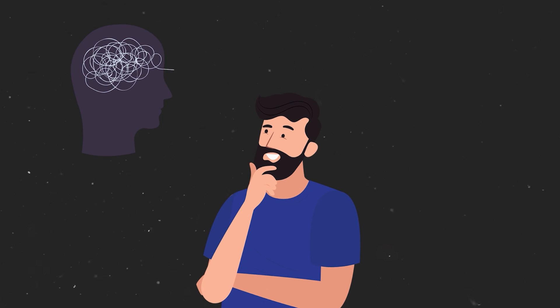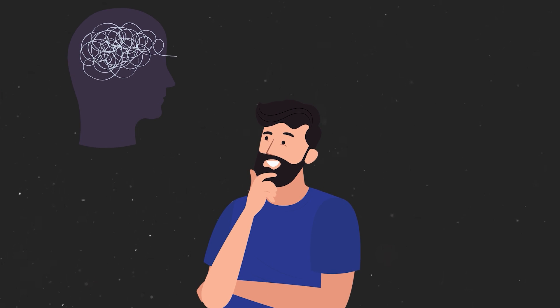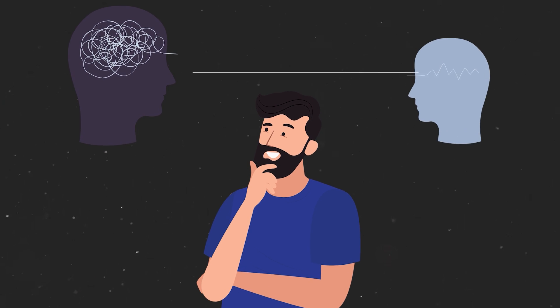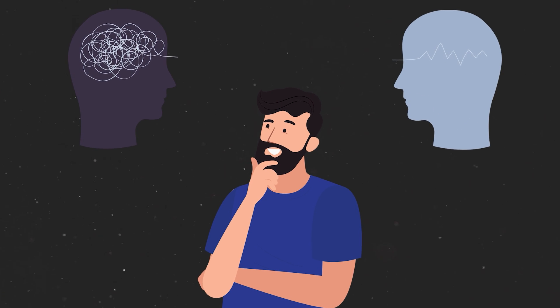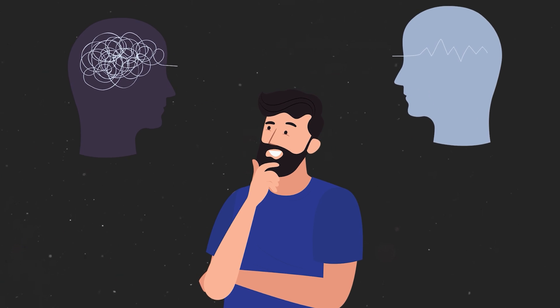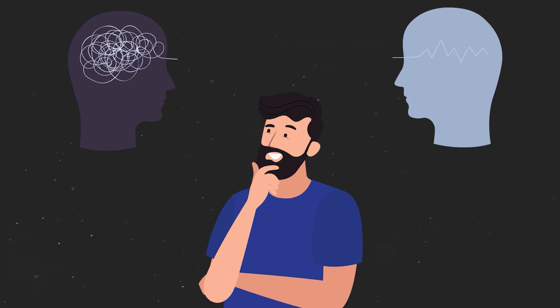Essentially, when something happens that is not in line with our mind's consistency, we become motivated to fix that inconsistency. This often results in a change in an attitude or belief to match the behavior, thus eliminating the dissonance.